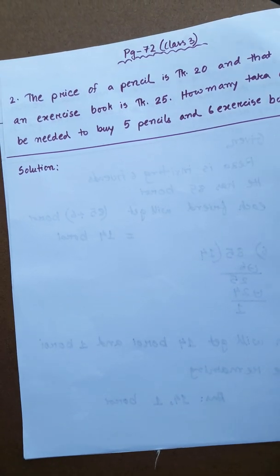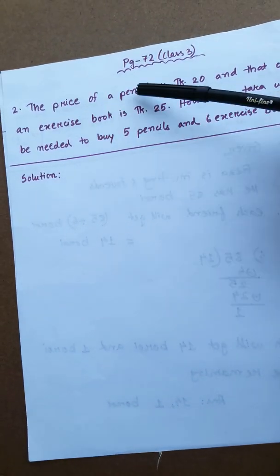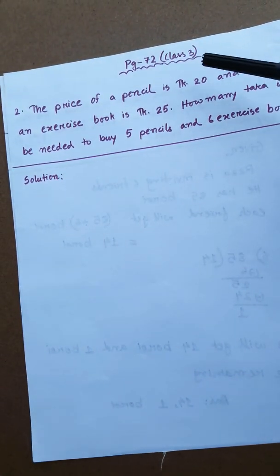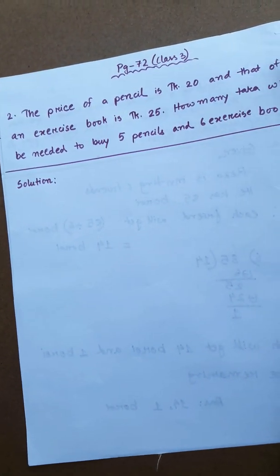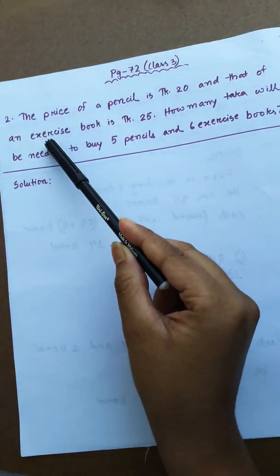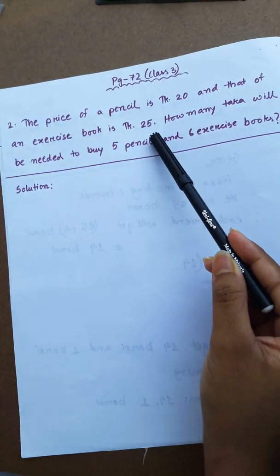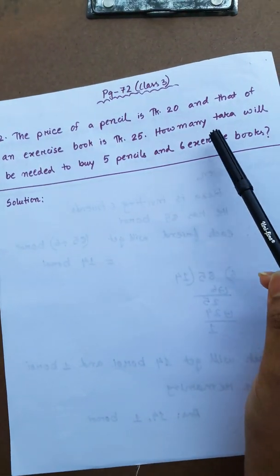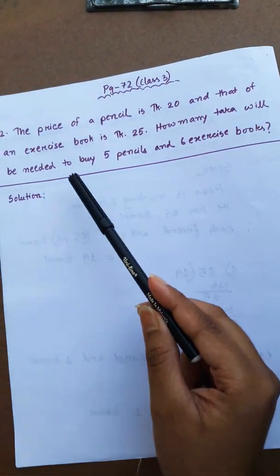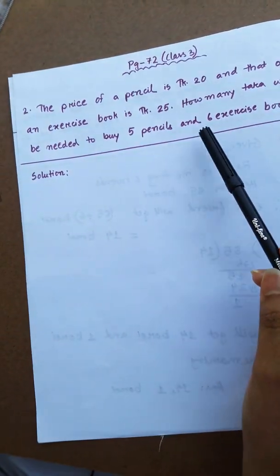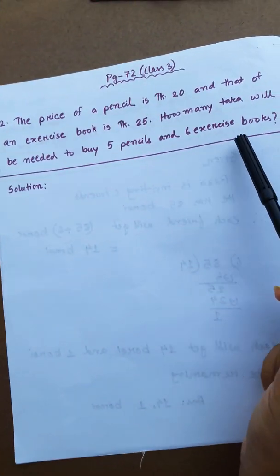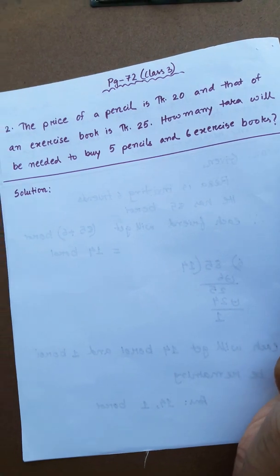Now the next problem, number 2: The price of a pencil is taka 20 and that of an exercise book is taka 25. How many taka will be needed to buy 5 pencils and 6 exercise books?